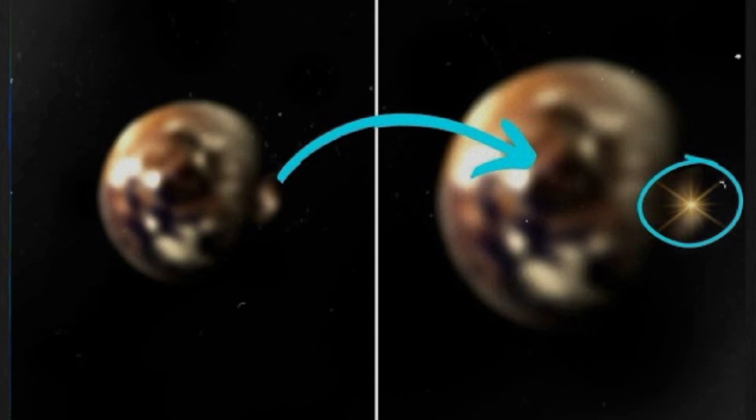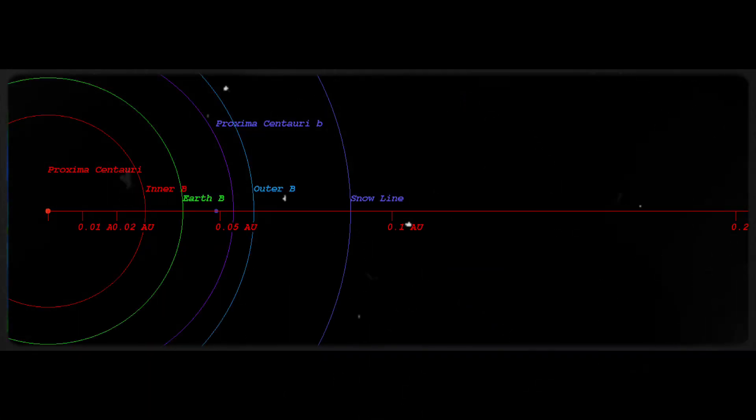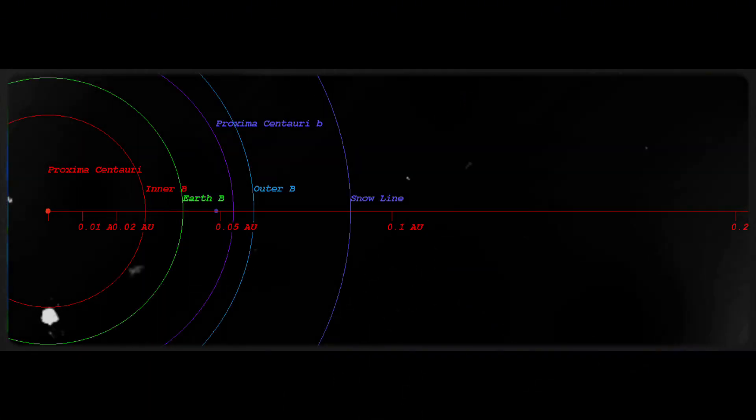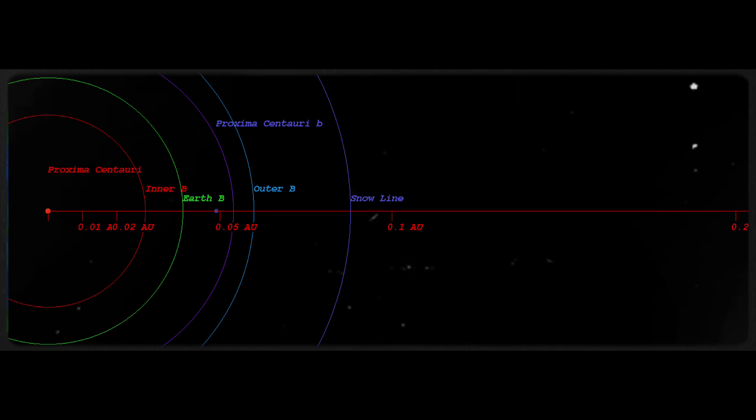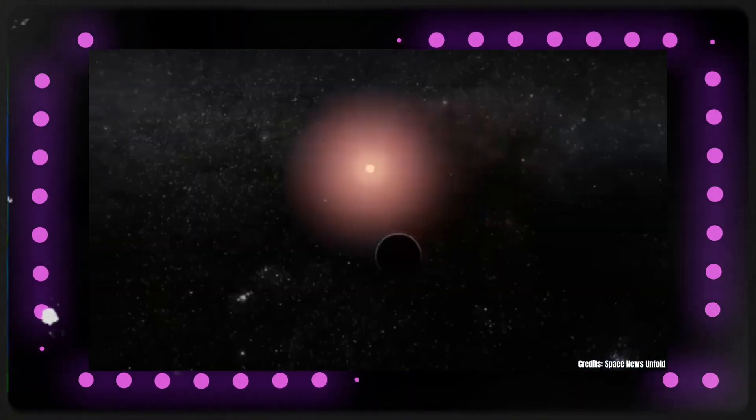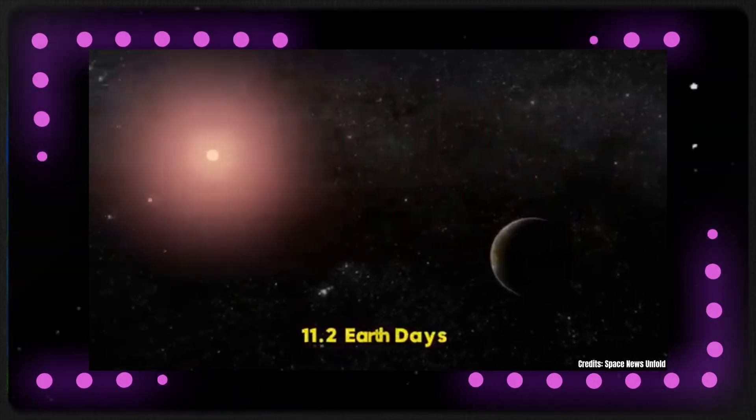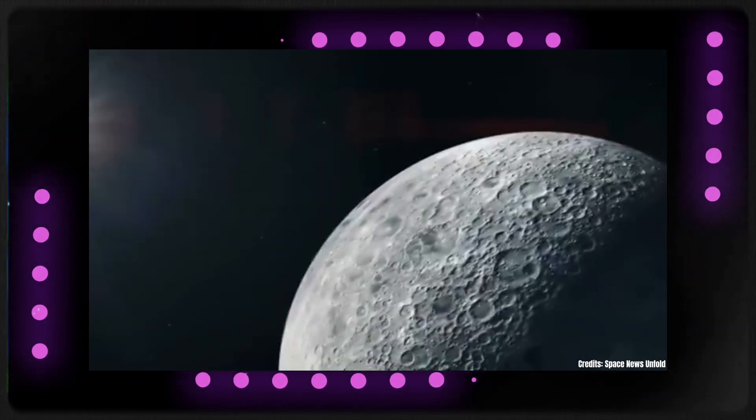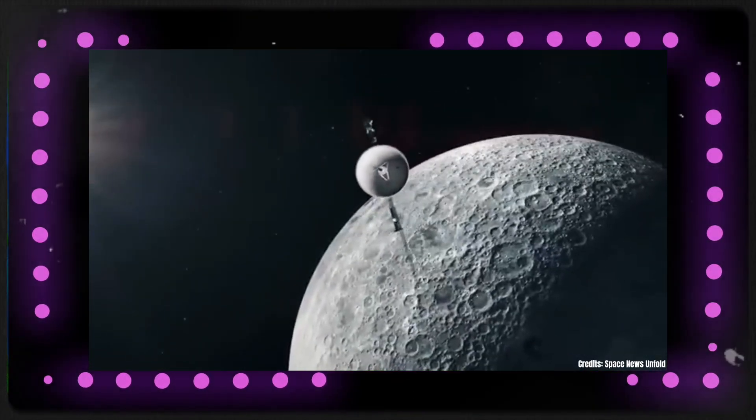However, there are differences. One major difference is the relative location of the two planets within their respective solar systems. Proxima b is much closer to its parent star, just 0.05 AU away, whereas even Mercury, the closest planet to our Sun, is 0.4 AU away.